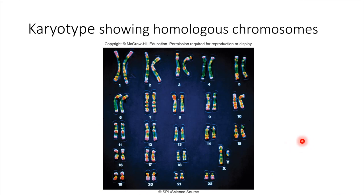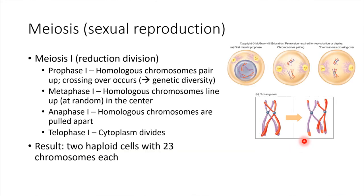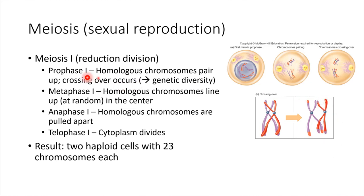There is a special type of cell division that takes place just for forming gametes, and this is meiosis. We're going to compare and contrast this with mitosis. Meiosis is the name for sexual reproduction — how cells can reproduce sexually — which means there is a shuffling of genes going on. That shuffling takes place early on during prophase one of meiosis one, where homologous chromosomes are lined up side by side and crossing over can take place. The chromosomes can literally swap pieces, which leads to a huge amount of genetic diversity.